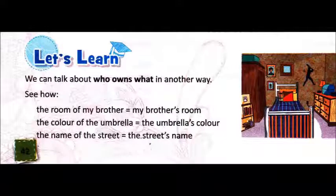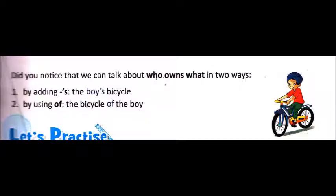So I hope it's clear to each one of you that to show ownership there are two ways to write the sentence. A — when we add apostrophe S, the sentence tells us who owns what. And B — when we use 'of', at that time also we come to know who owns what.